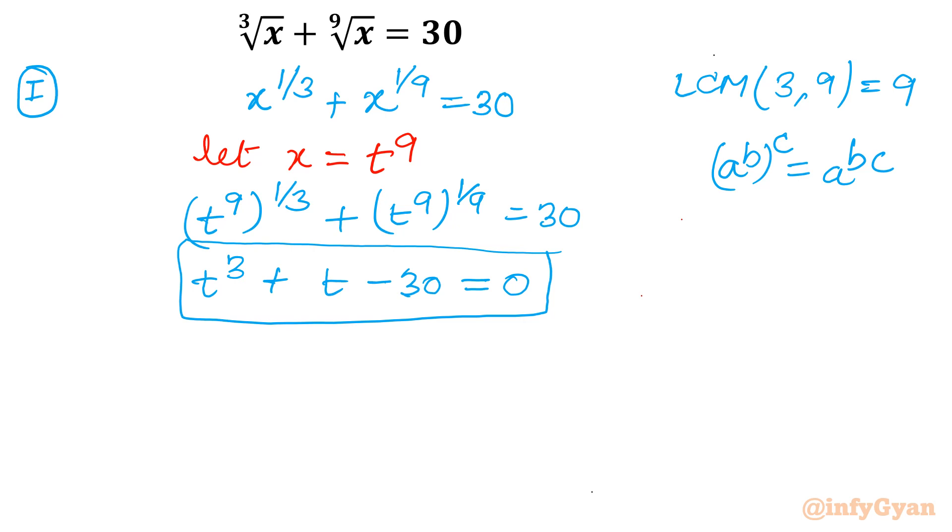For synthetic division we should know the first root. To find out that value we can write using rational root theorem, we can find out the factors of 30 as the leading coefficient is 1. So let us write those eligible factors: plus minus 1, plus minus 2, plus minus 3, plus minus 5, plus minus 6, plus minus 10, plus minus 15, and plus minus 30.